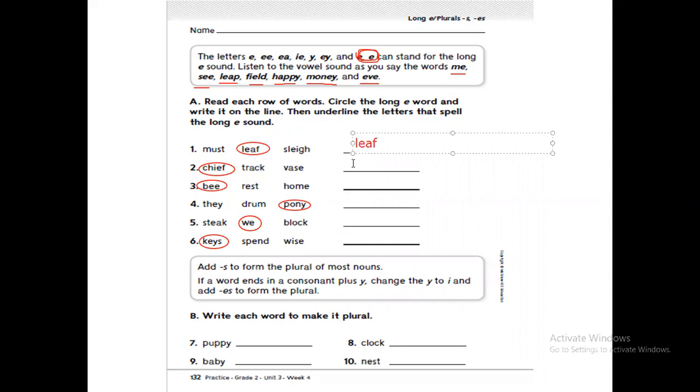Leaf, chief, be, pony, we, and keys. Now let's underline the letters that spell the long 'e' sound. Leaf - 'ea'. Chief - 'ie'. Be - double 'e'. Pony - the letter 'y'. We - the letter 'e'. Keys - 'ey'.